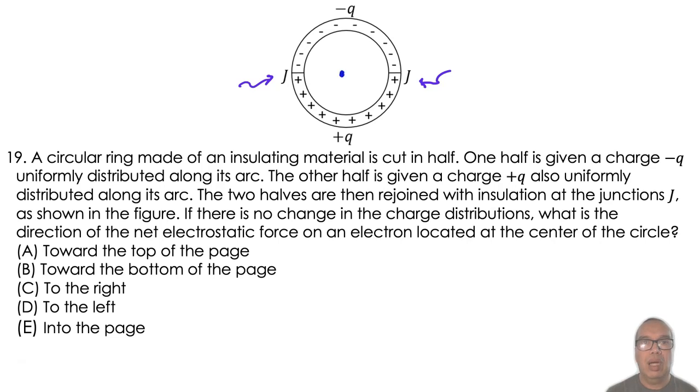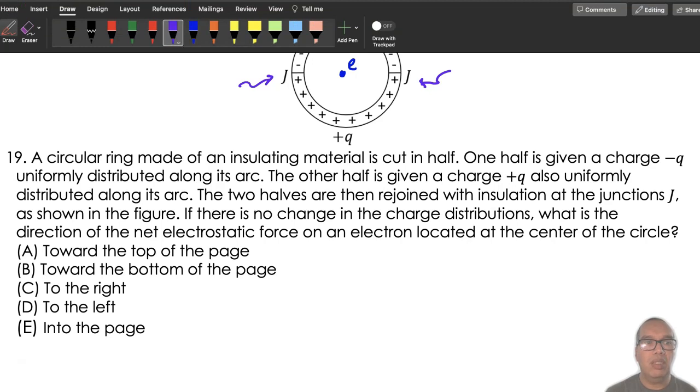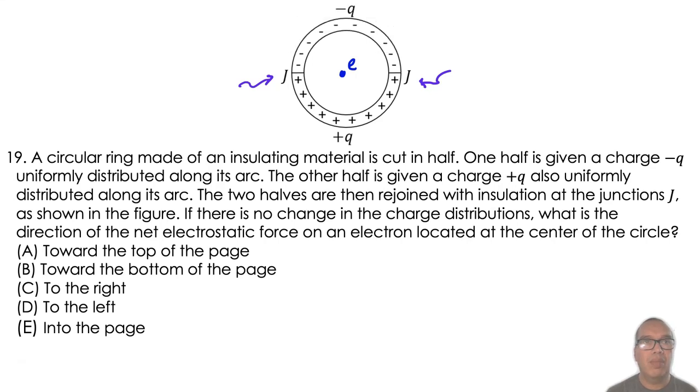Electrons are negatively charged, so they will be attracted to positive charges and repelled by negative ones.